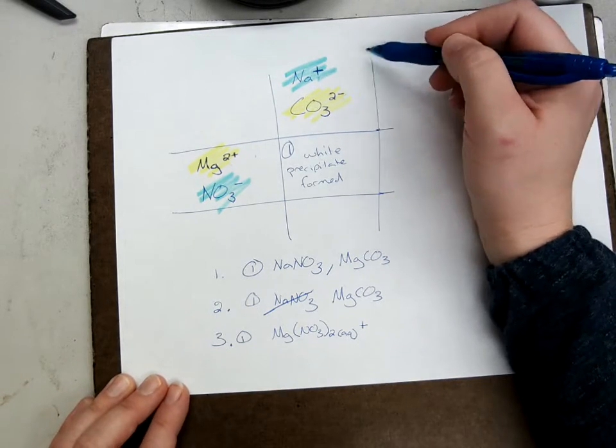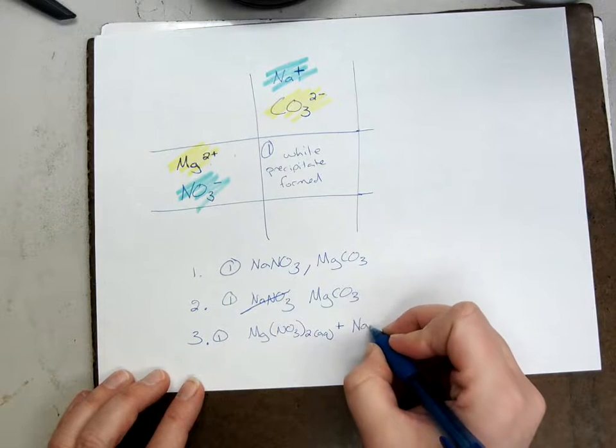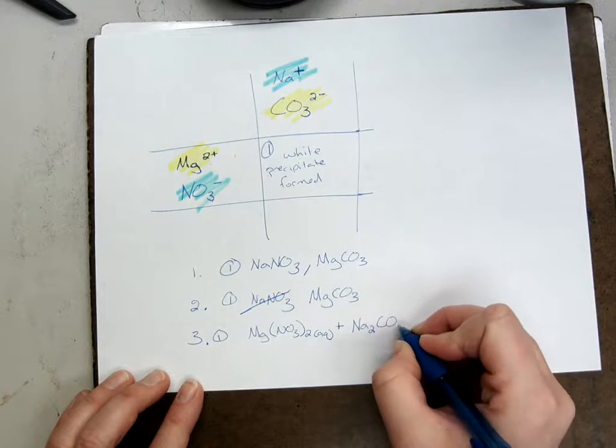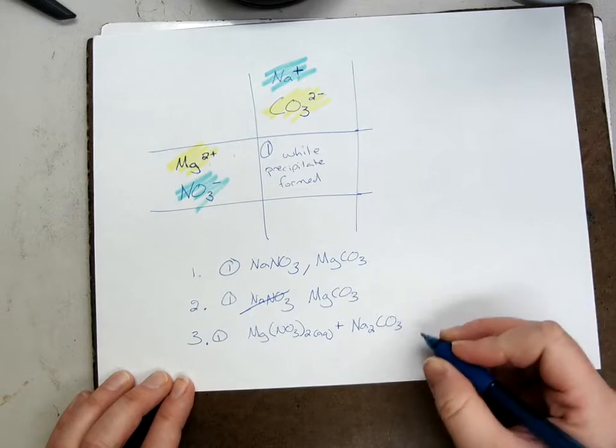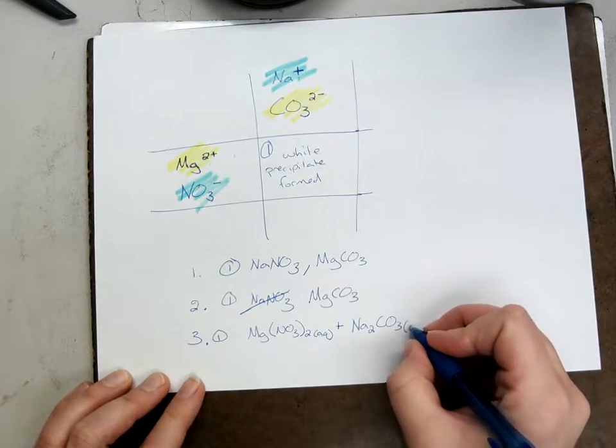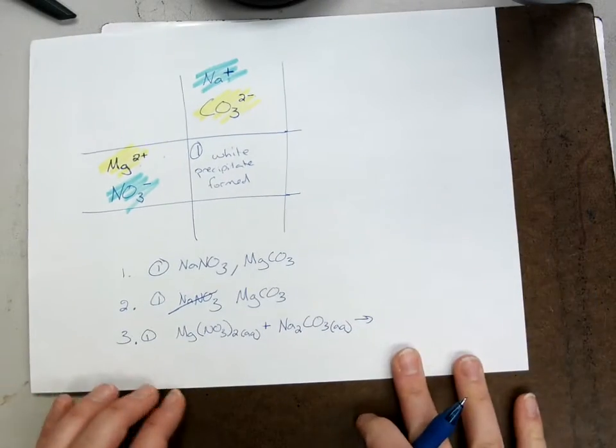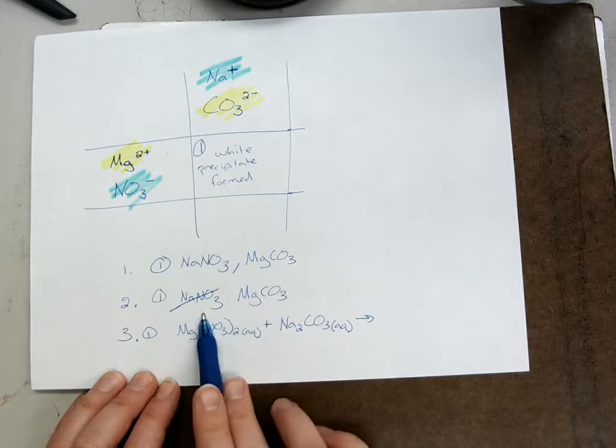See the plus one, see the minus two, cross them down. Na2CO3. And he was also clear before the reaction. He was nice and clear, so he was aqueous.